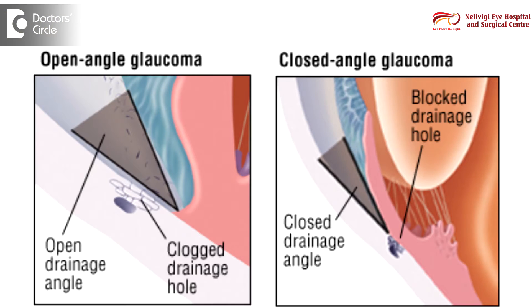In open angle glaucoma, the chance of blurred vision and headache is very low. Whereas in angle closure glaucoma, the incidence of blurred vision and headache is extremely high. This is because in angle closure glaucoma, the pressure within the eye mounts up all of a sudden within a span of a few hours.